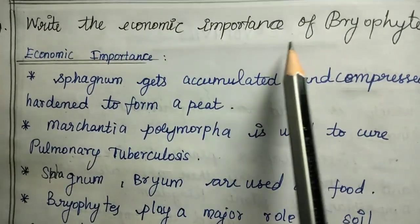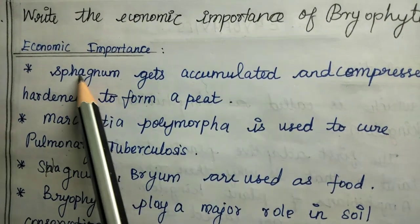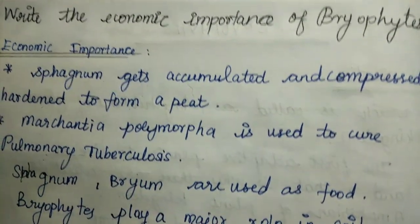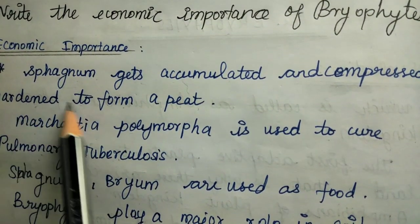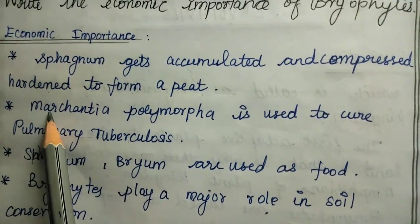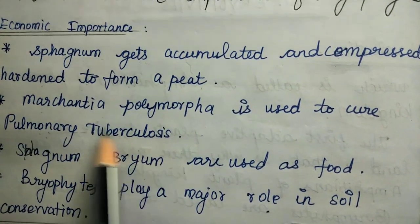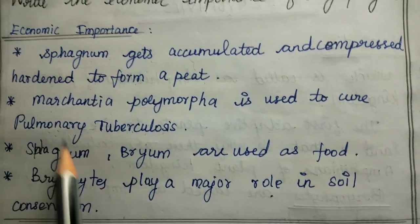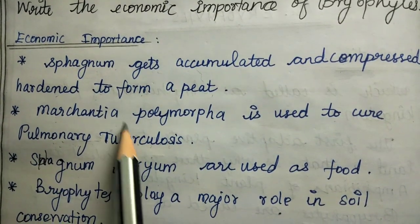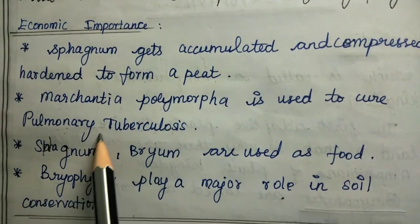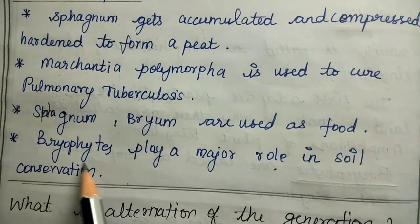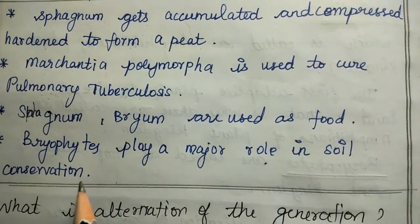Fourth question: write the economic importance of bryophytes. Sphagnum gets accumulated and compressed to form peat, which is used as fuel. Marchantia polymorpha is used to cure pulmonary tuberculosis. Sphagnum and Bryum are used as food. Bryophytes also play a major role in soil conservation.